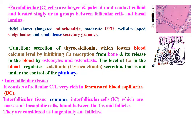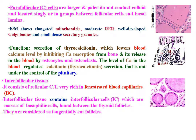Interfollicular tissue consists of reticular connective tissue very rich in fenestrated blood capillaries. It contains interfollicular cells, which are masses of basophilic cells found between the thyroid follicles, considered as tangentially cut follicles.